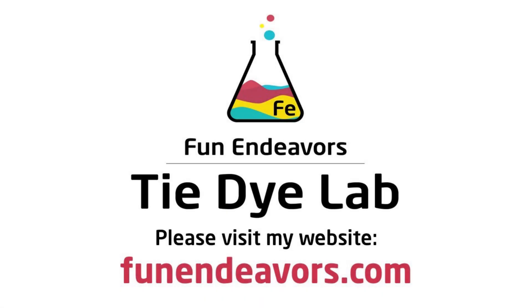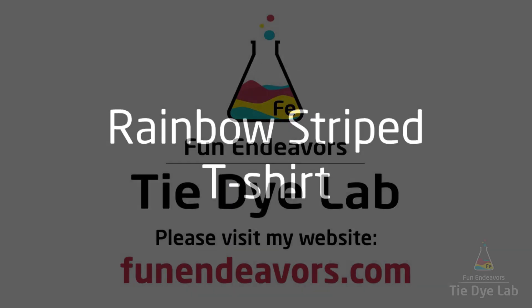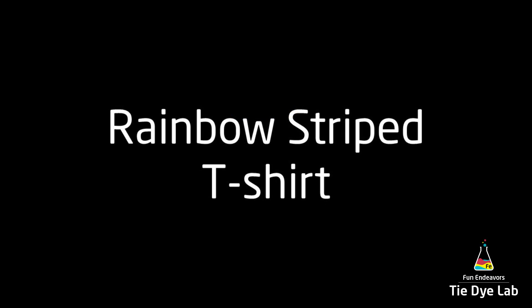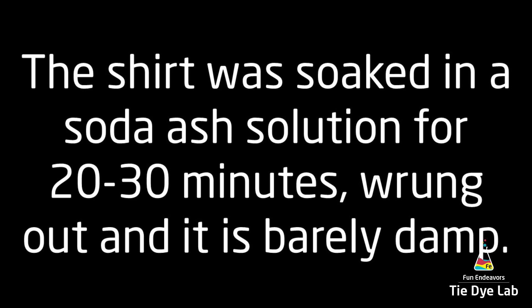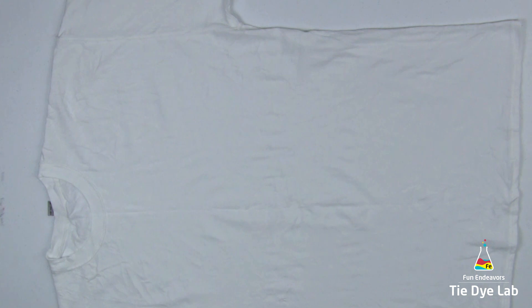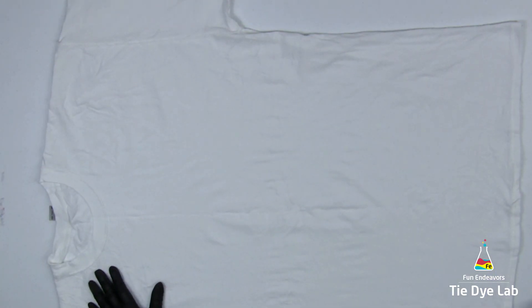Hi guys, it's Angie with Fun Endeavors Tie-Dye Lab. Today I'm going to make a rainbow striped shirt and then later I'm going to add some black to the top. The shirt was washed and dried, soaked in soda ash solution for at least 20 to 30 minutes. I wrung it out in my panda spin dryer so it's just barely damp.